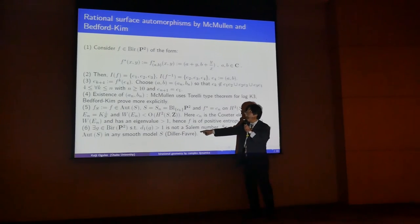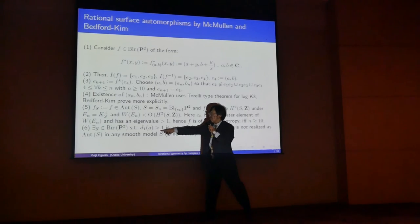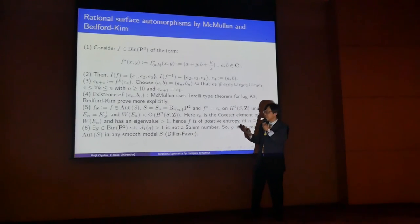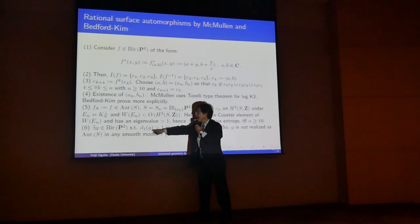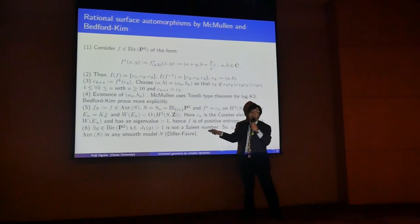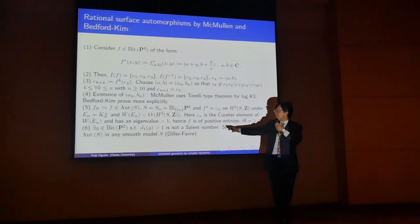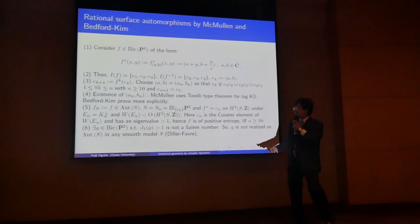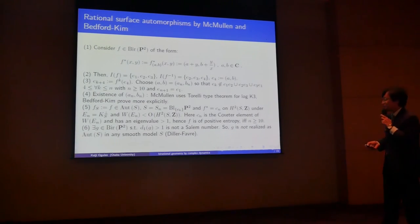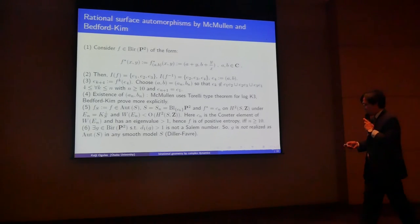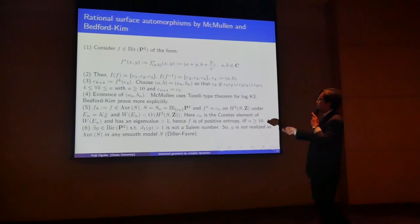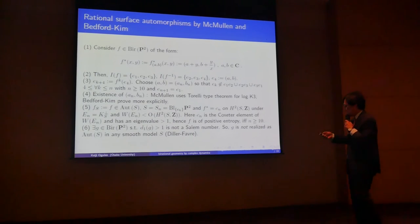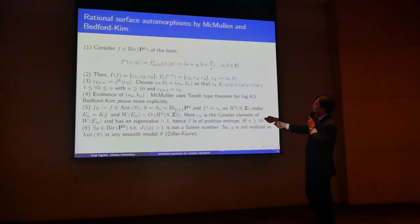This is observed by the fact that the dynamical degree is a birational invariant. So if it will be biregular, then this must be a certain Salim number. So if one can find a non-Salim number, then it is never biregularized. This argument is derived from some very small part of the review of the surface case.